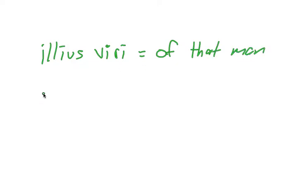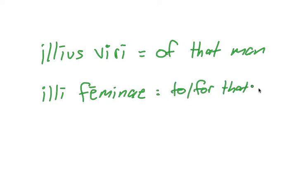So I'll give you a genitive example. Illius viri would be of that man. Illi feminae would be to or for that woman.